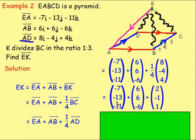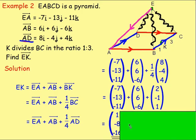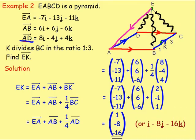A quarter of 8 is 2, a quarter of negative 4 is negative 1, and a quarter of 4 is 1. Working out: negative 7 add 6 add 2; negative 13 add 6 add negative 1; and negative 11 add negative 6 add 1. That gives us 1, negative 8, and negative 16. Or written in the form of i, j, k: i take away 8j take away 16k. And that is Example 2.